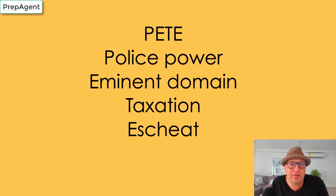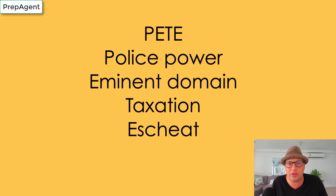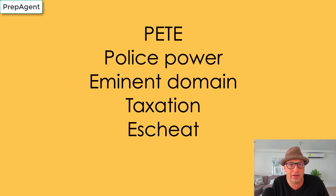Eminent domain means they do take the property away from you, and just compensation is paid through a process known as condemnation. If they make your property unusable and they don't pay you, you could file for what's called inverse condemnation. Next up is taxation — we all know what that is; got to pay the man. And escheat is when the government takes your property because you have no heirs; they can't find who to give it to, so the property escheats to the state.